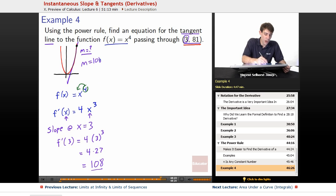So, we now know that the slope of our tangent line is 108. So, if we're going to work out the tangent line.